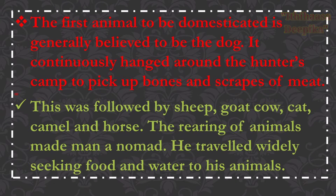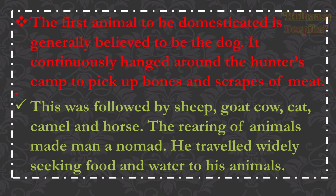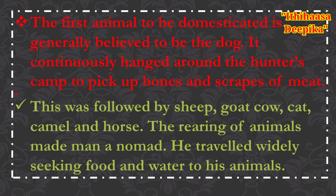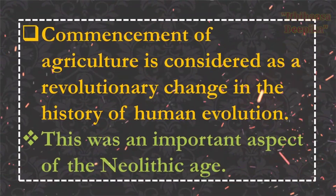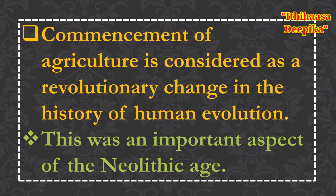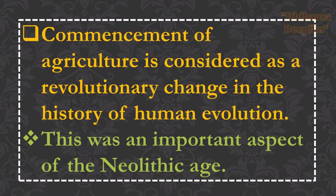The first animal to be domesticated is generally believed to be the dog. It continuously hung around the hunter's camp to pick up bones and scraps of meat. This was followed by sheep, goat, cow, cat, camel and horse. The rearing of animals made man a nomad; he travelled widely seeking food and water for his animals. The commencement of agriculture is considered a revolutionary change in the history of human evolution. This was an important aspect of the Neolithic age, which is therefore also called the Neolithic revolution.